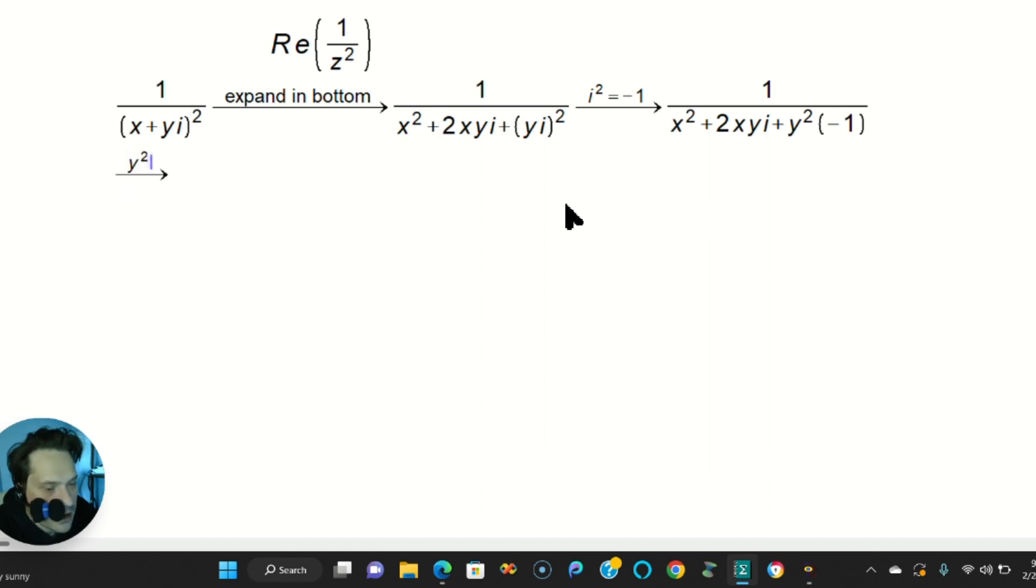So multiply this out. What I mean is now, remember, y squared times negative 1 will give you negative y squared as a term. So you apply it. 1 over x squared plus 2xyi minus y squared. At this point, let's do this. So regroup.